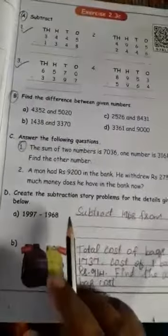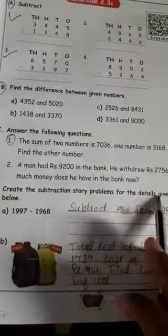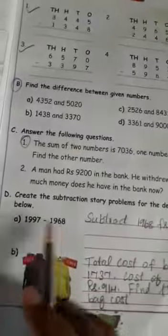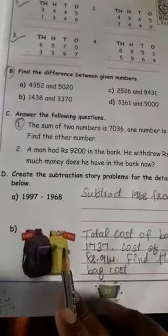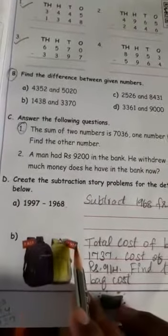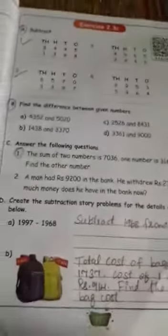And then create a subtraction story problems for the details given. Here 2 numbers are having in your creativity, in your own imagination, you should write a story problem. And here 2 bags are there, 1 bag is rupees 823 and another bag is 914. How we have to write in your story problem.